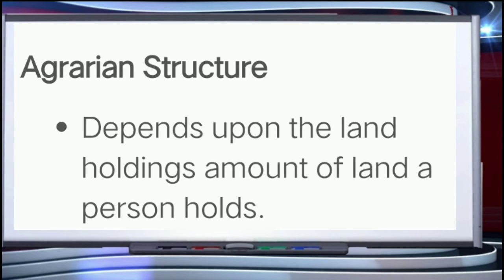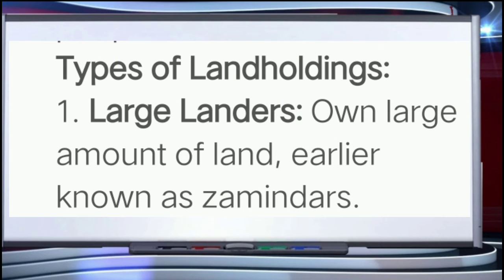The term agrarian structure is often used to refer to the structure of distribution of land holdings. This is important because agricultural land is the most important productive resource in rural areas. The land possessed by a person determines his role in the process of agricultural production. Regarding types of land holdings: medium and large landowners can earn large incomes from cultivation when the weather is favorable. They own their land and were earlier known as zamindars.